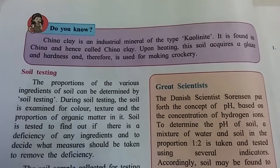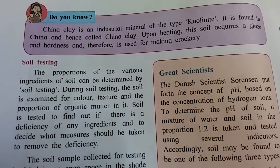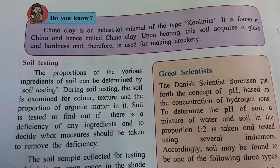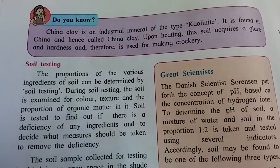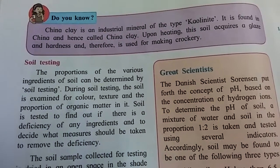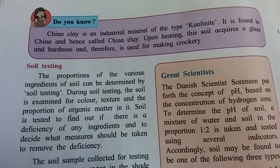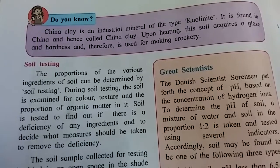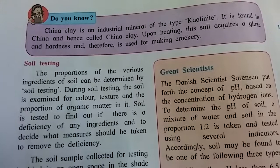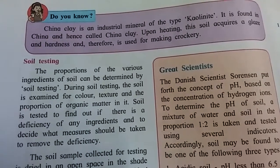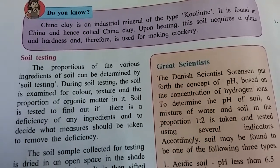Next is soil testing. The proportion of the various ingredients of soil can be determined by soil testing. During soil testing, the soil is examined for color, structure, and the proportion of organic matter in it.